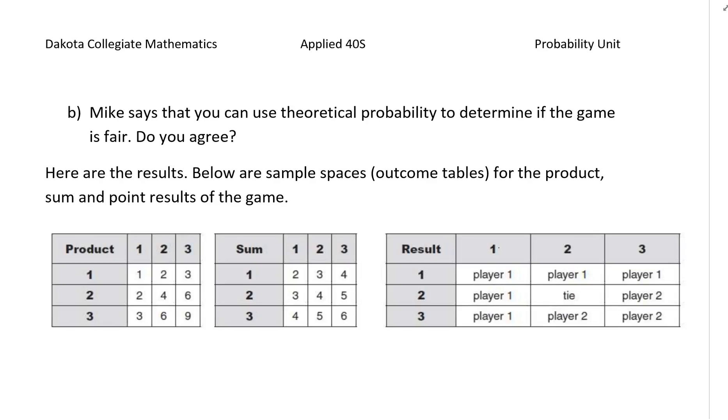It says here are the results below, the sample space for the product, the sum, and point results of the game. So if we look here, slip of paper one and one when you multiply them together you get a one. When you add them together you get a two. So that's what they're looking at. So if the product is a one and the sum is a two then player one wins.